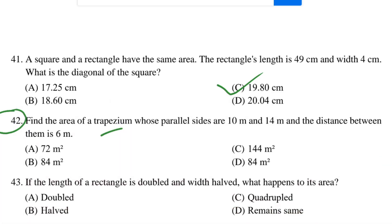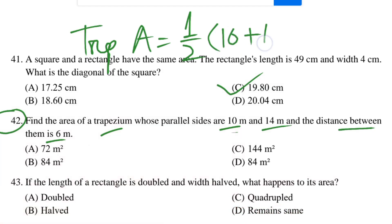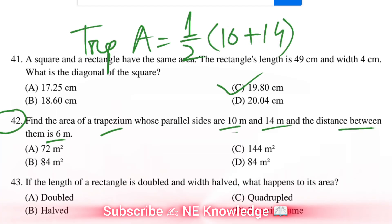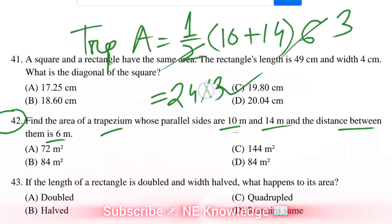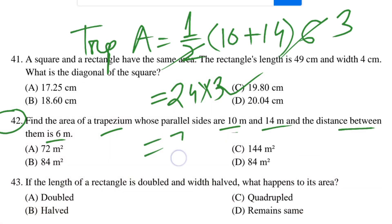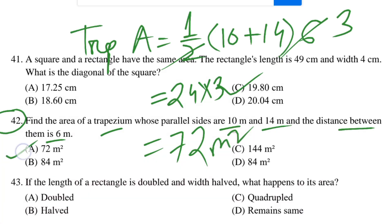Find the area of a trapezium whose parallel sides are 10 metre and 14 metre and the distance between them (height) is 6 metre. The formula is: area equals half into (a plus b) into h. So half into (10 plus 14) into 6 equals half into 24 into 6 equals 72 square metres. Answer is option B.